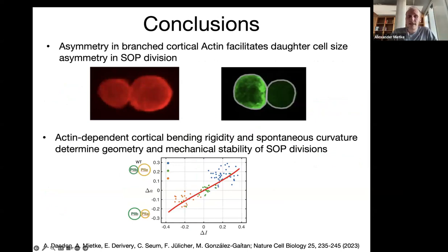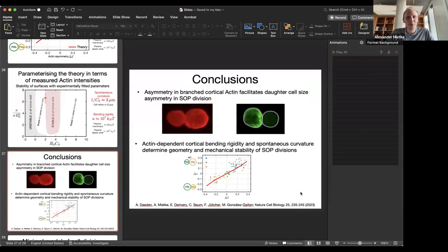That brings me to the conclusion. I've shown you that we've seen an asymmetry in branched cortical actin, which facilitates daughter cell size asymmetry in SOP divisions. We have discussed a minimal model of asymmetric cell division, where we found that a combination of bending rigidity and spontaneous curvature is necessary to explain both the geometry, but also the mechanical stability of this division process. I'm now very happy to take any questions or points that you would have.